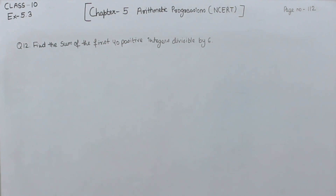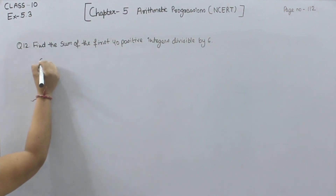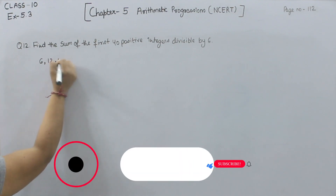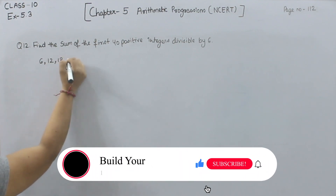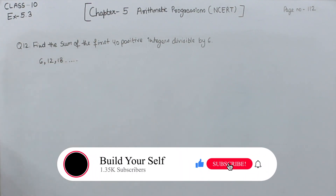First, we have to find out the integers that are divisible by 6. So we have 6, 12, 18, and so on — we can write the table of 6 here. These are the numbers which are divisible by 6.